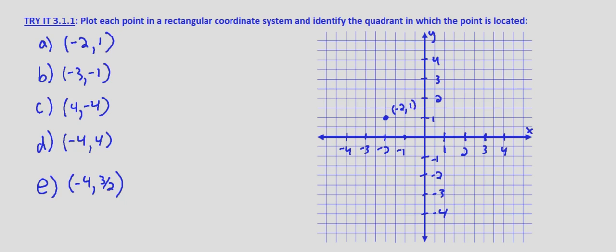If you want to, you can always draw arrows — basically the legs of a triangle — 2 units to the left, 1 unit up, so you know right where it is. We're also asked to identify what quadrant it's in. Quadrants start at the upper right and we work our way counterclockwise: quadrant 1, quadrant 2 to the left, quadrant 3, and quadrant 4. Anytime we have a negative x value and a positive y value, we're going to end up in the second quadrant.